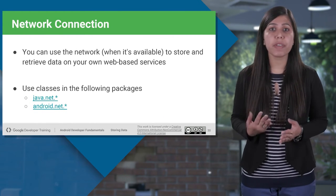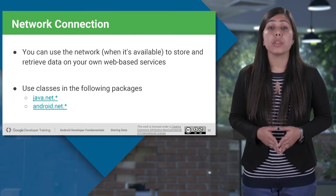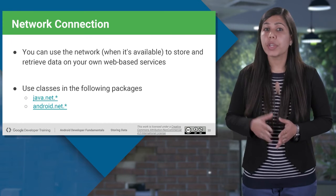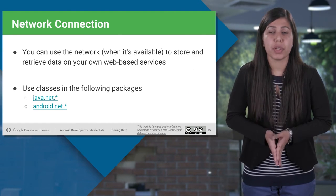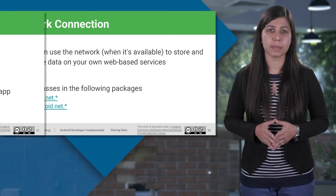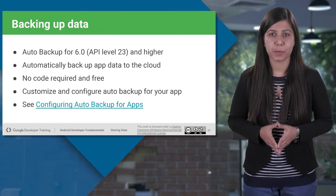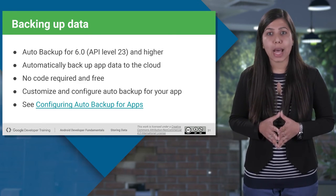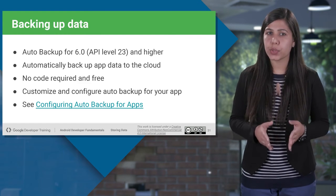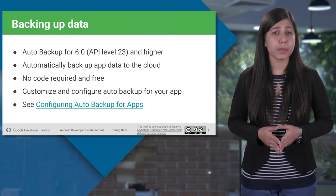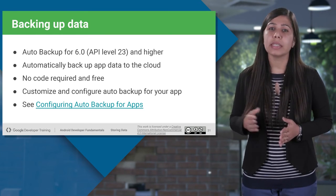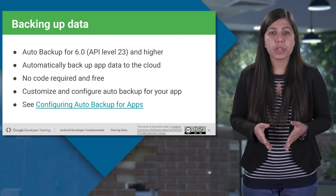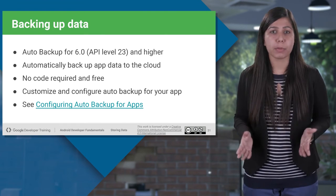Another way of storing and retrieving data is through network connections using your own web-based services. With an available network, you can easily store data on the web using the relevant Java network package classes. From API level 23, Android provides an auto-backup service that allows you to copy your persistent application data to remote cloud storage. This allows you to restore application data and settings if the user switches Android devices, reinstalls the application, or performs a factory reset. You just need to customize and configure the auto-backup settings — no code is required, and this service is absolutely free.